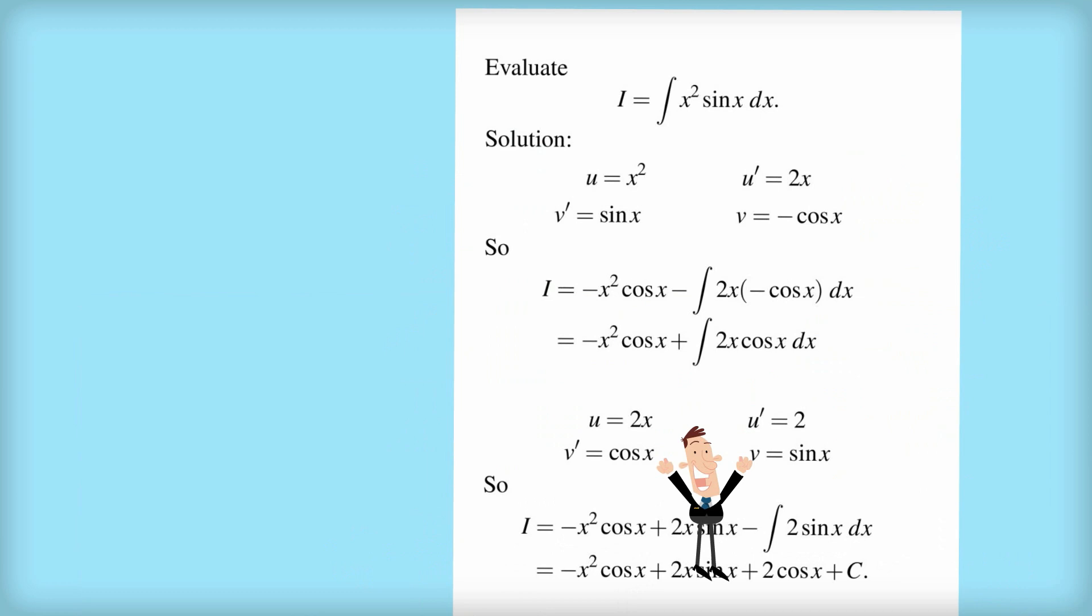So now we can finish off the problem. We say that I equals, we've got this negative x squared cos x, which is what we had up here, and now these two parts are just the integral. This part here is the u v, and this is minus the integral of u dash v with respect to x.